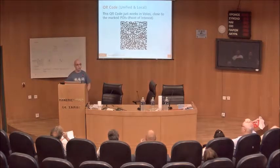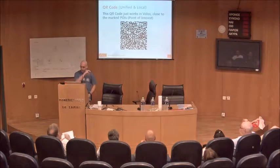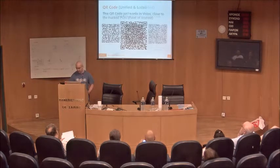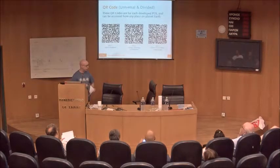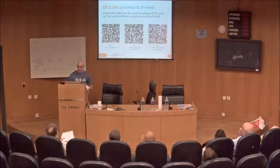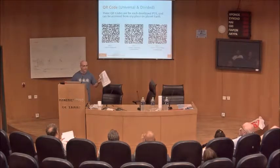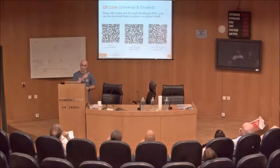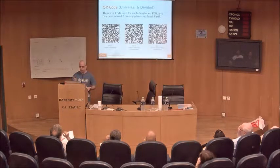These locations only work when you're in Volos, but if you're not — if you're in Shanghai or wherever — you can still access the information. There are QR codes for each individual point. If these files are available on the internet, not just in Google Docs, everyone could access the file, scan it, and use it from their own apartment.